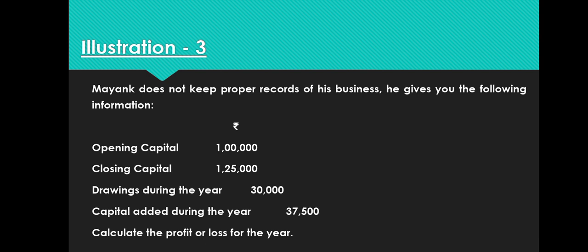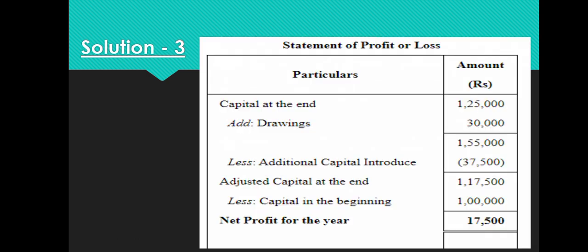Illustration: Mayank does not keep proper records. Opening capital, closing capital, drawings, and additional capital are all given. Statement of Profit and Loss: Closing capital + drawings − additional capital = adjusted capital. Adjusted capital − opening capital = net profit Rs. 17,500 for the year.